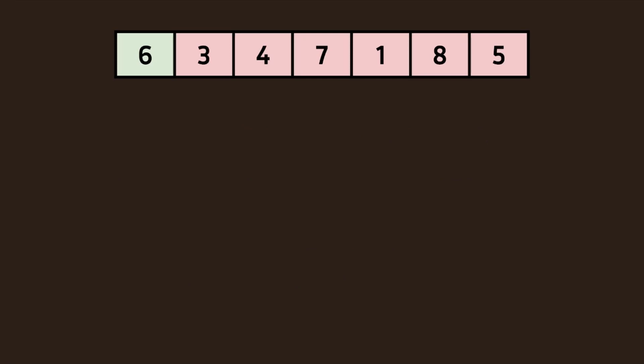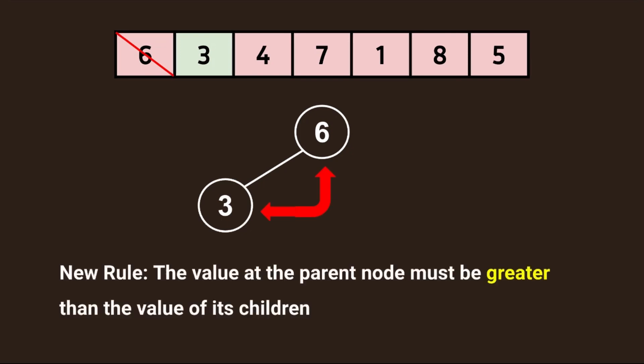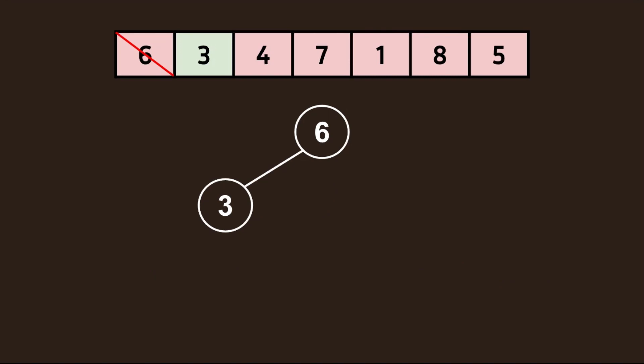We'll use the same array from before and start with 6 as the root node. Adding 3 to the left, when we compare the two values, we need to remember our new rule: the value at the parent node must be greater than the value of its children. Since this condition has already been met, we can look at the next value in our array. Comparing 6 and 4, we see that the condition has already been met, so we can continue.